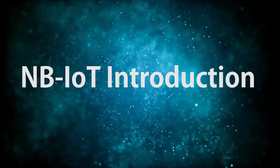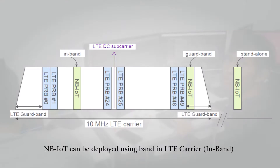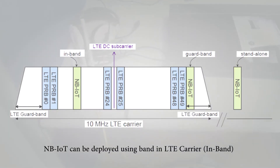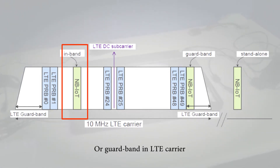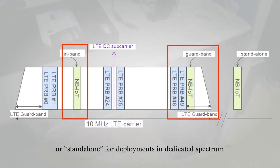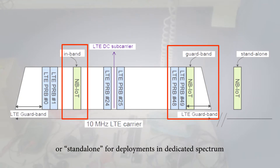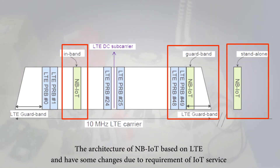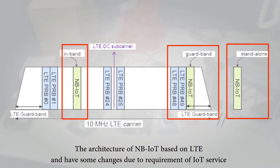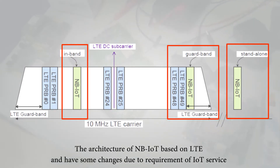NB-IoT can be deployed using in-band LTE carrier, guard bands in LTE carrier, or stand-alone in dedicated spectrum. The architecture of NB-IoT is based on LTE with some changes due to the requirements of IoT services.